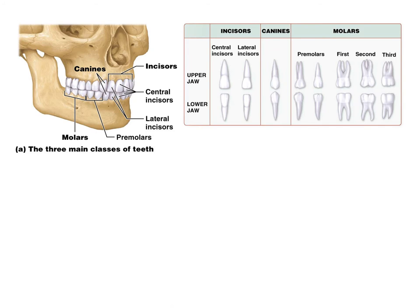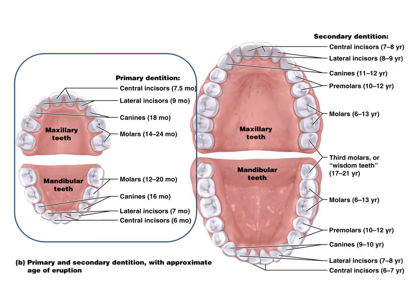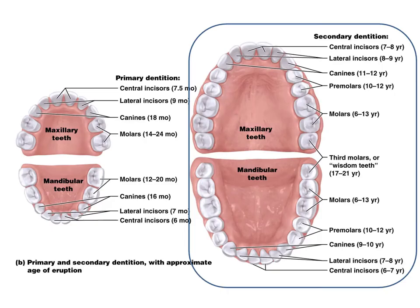These are the primary teeth. The secondary teeth are the permanent teeth — we have 32 permanent teeth: four incisors, two canines, and up to six molars in each jaw. Here are the secondary teeth.